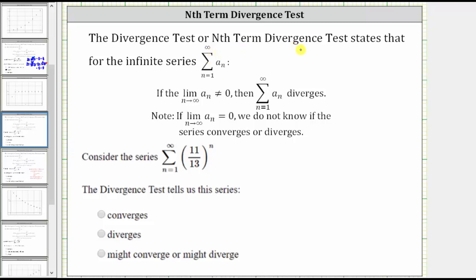The divergence test, or nth term divergence test, states that for the infinite series — the sum from n equals one to infinity of a sub n — if the limit as n approaches infinity of a sub n doesn't equal zero, then the series diverges. It's important to note that if the limit equals zero, we do not know if the series converges or diverges. We can never use the divergence test to show convergence.